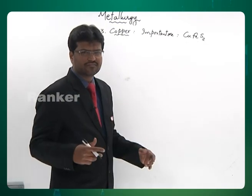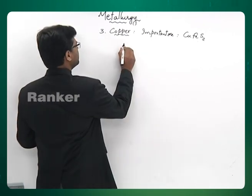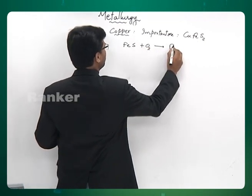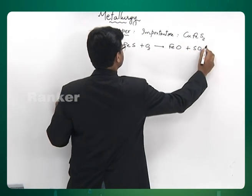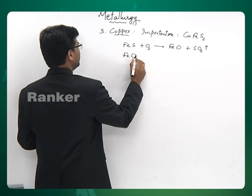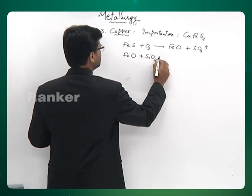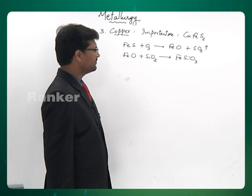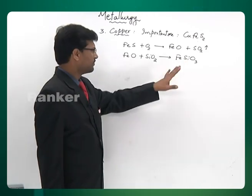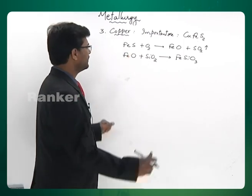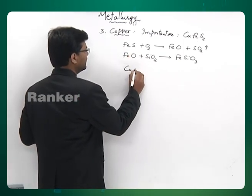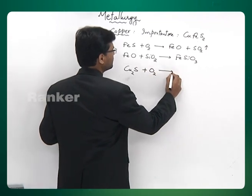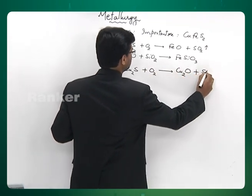Now look at the various reactions in the Bessemer converter. FeS reacts with oxygen to give FeO, and SO₂ is lost. FeO then reacts with SiO₂ (sand) and becomes FeSiO₃. It is this substance that burns at the mouth of the furnace with a green flame; if the colour changes, formation of FeSiO₃ has stopped, meaning FeS has been totally used up. Next, copper sulphide gets a chance to be oxidized — you get copper oxide and SO₂, which escapes out.